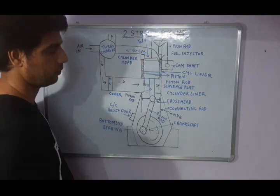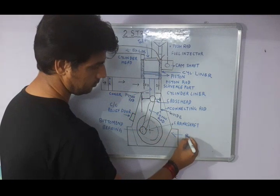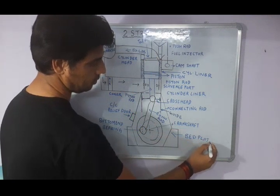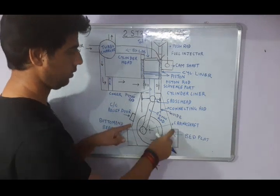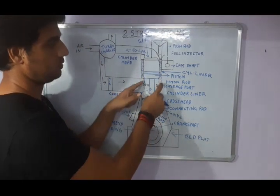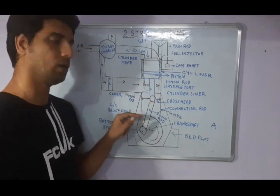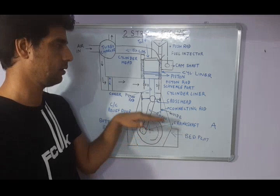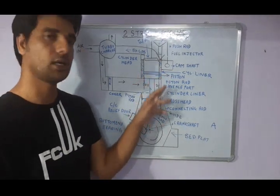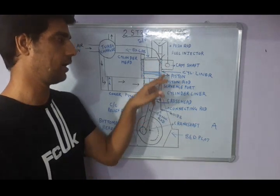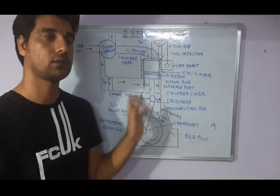These are the remaining structural parts of the diesel engine. This lower section is known as the bed plate. From here, going upward in an A-shape, this body is known as the A-frame. On top of the A-frame, the cylinder block is mounted, and this outer body from here to here is known as the entablature — the outside body of the engine, not the cylinder liner itself.